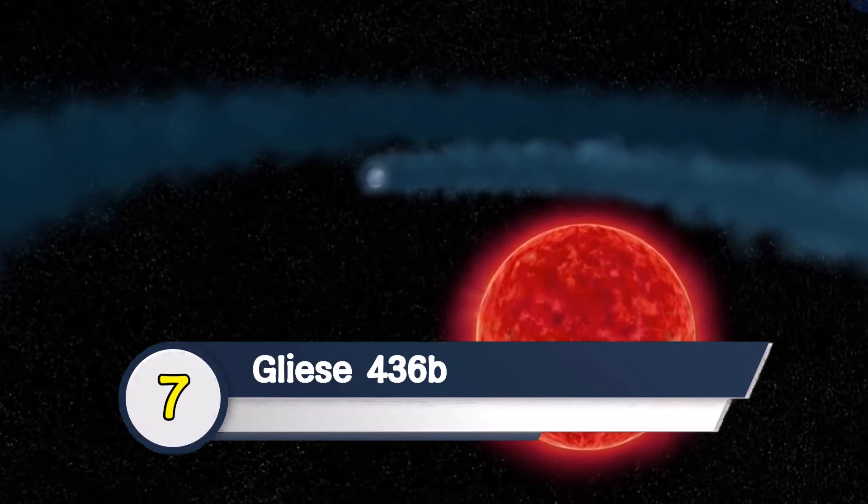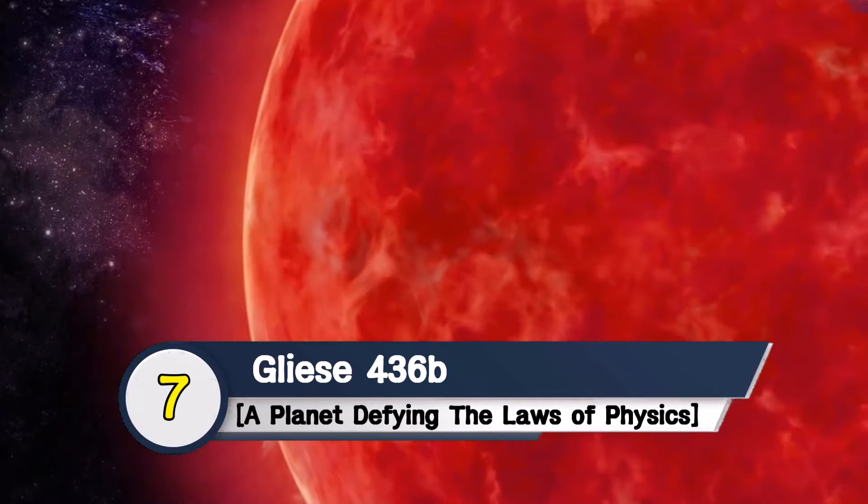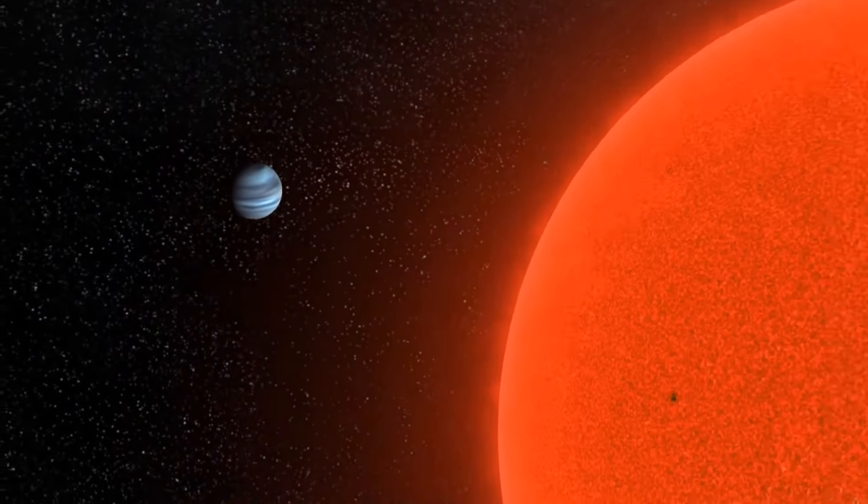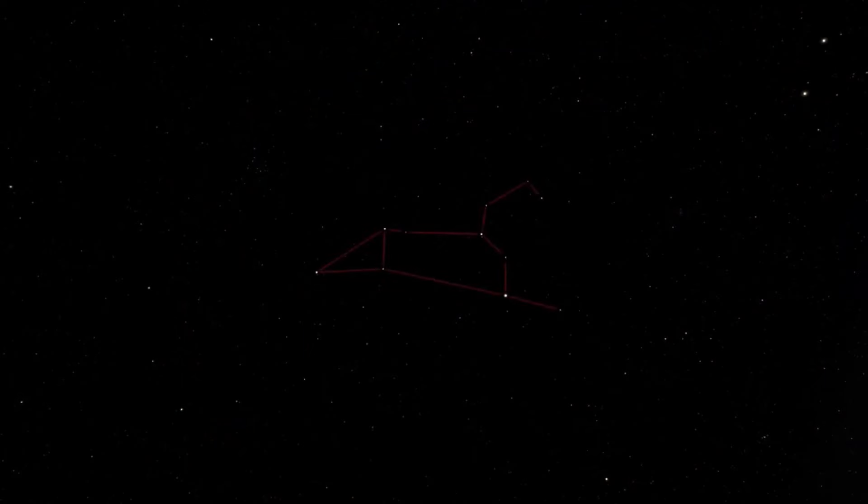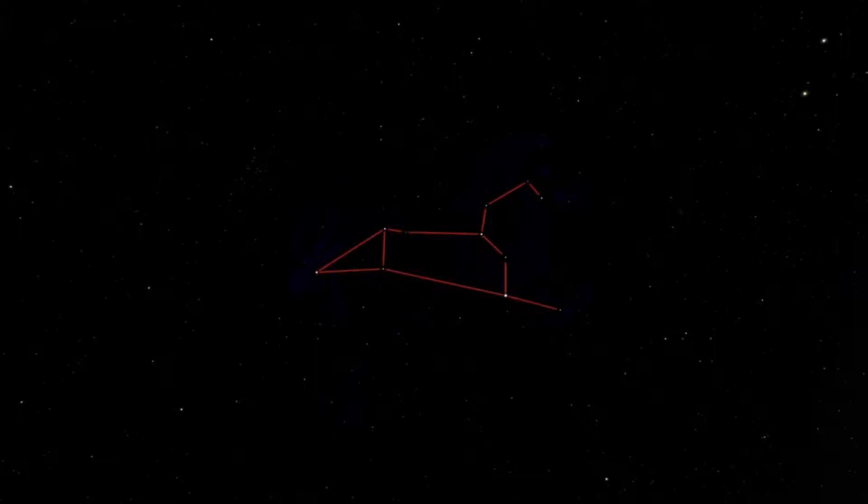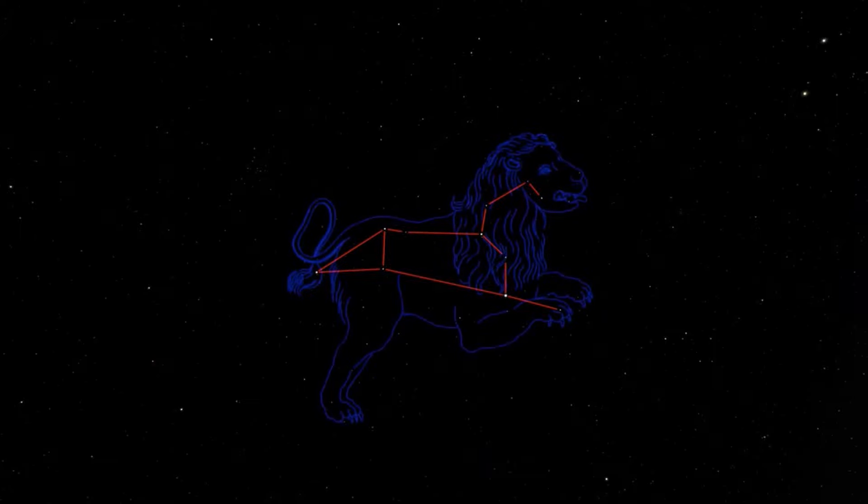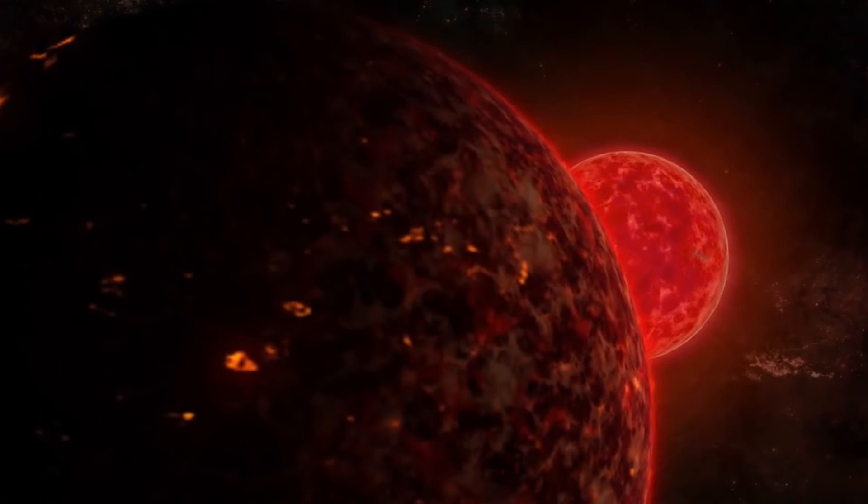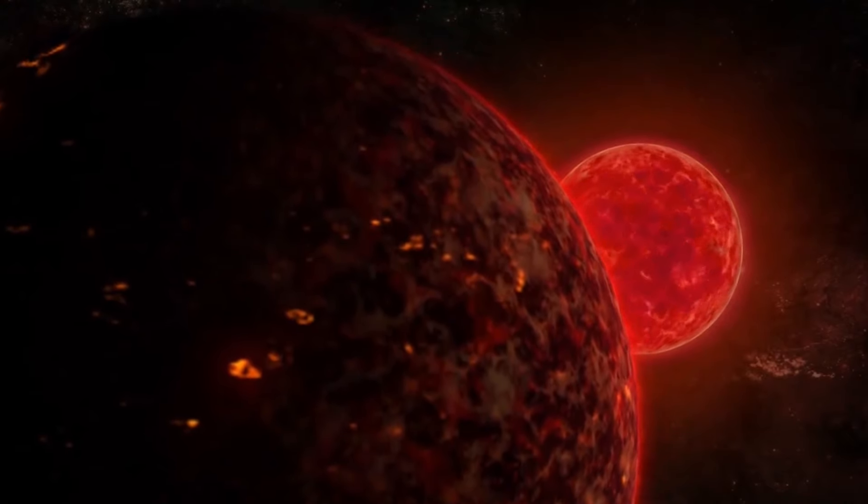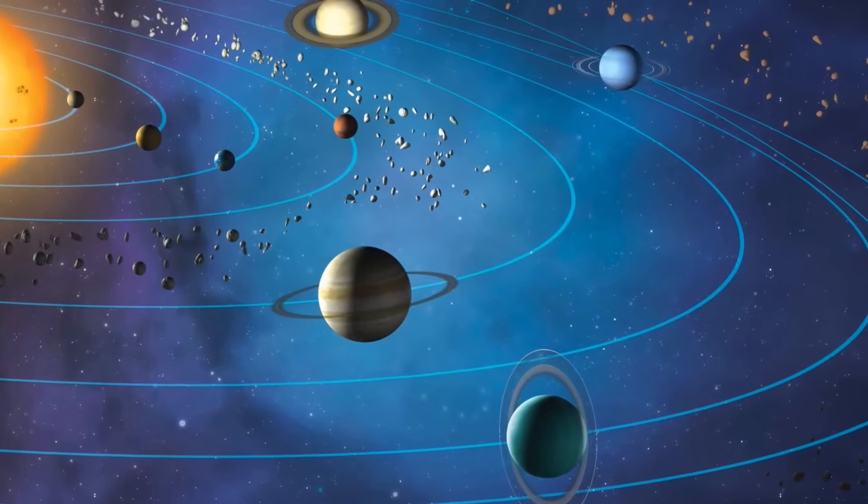Gliese 436b, a planet defying the laws of physics. Located 30 light-years away from Earth, Gliese 436b is an exoplanet in the constellation of Leo. According to the fact sheet, the distance between this planet and its star is 15 times closer than Mercury is to the Sun.